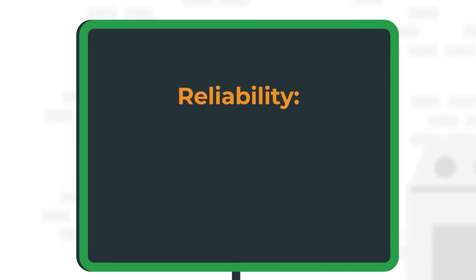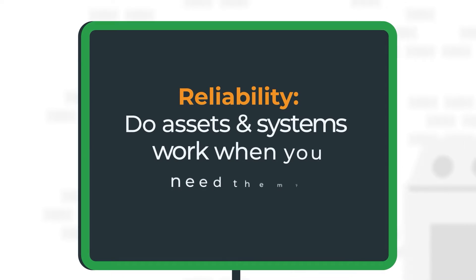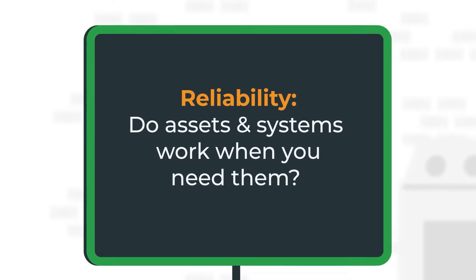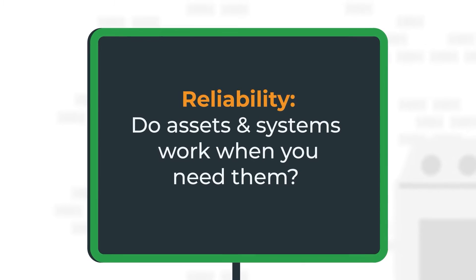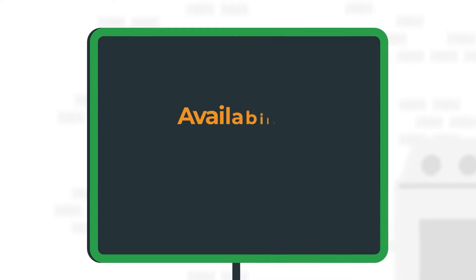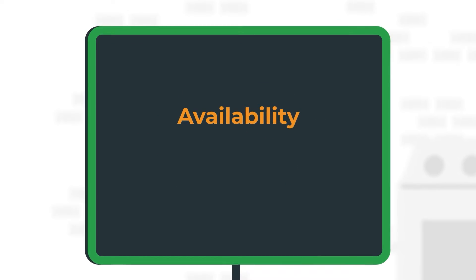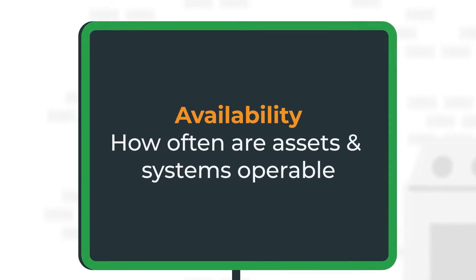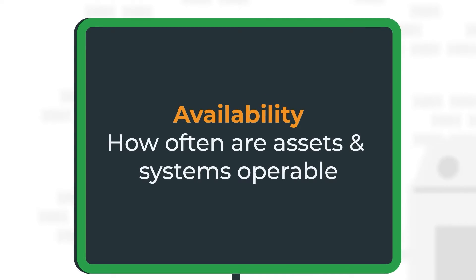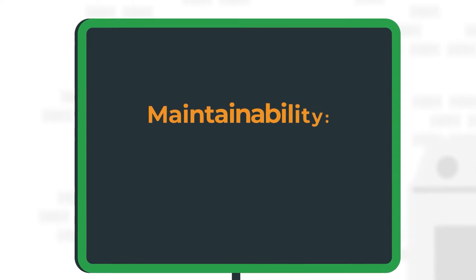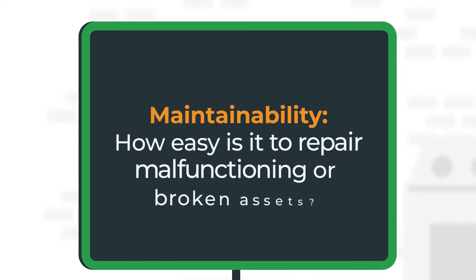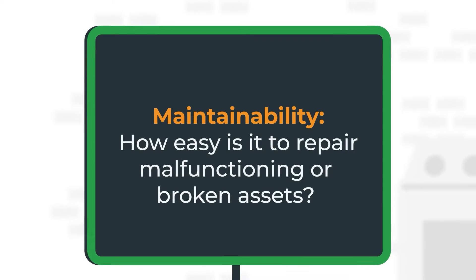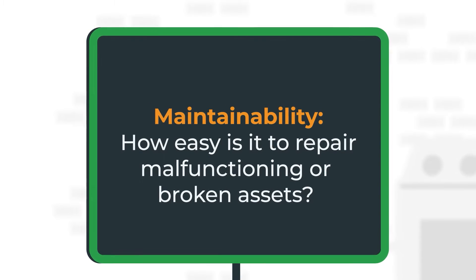Reliability refers to an asset's ability to perform its required function under specific conditions during a specific period of time. Availability refers to an asset's ability to operate as needed at any time and under any conditions. And maintainability describes how quickly and easily an asset can be repaired after experiencing a failure.